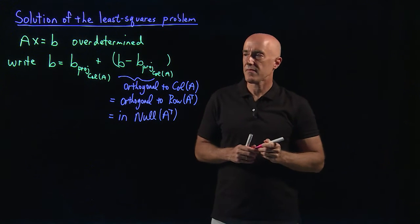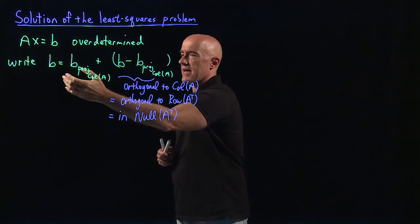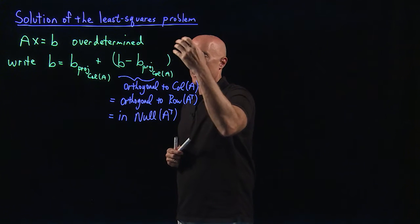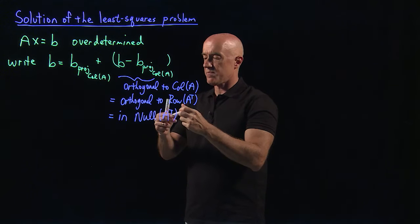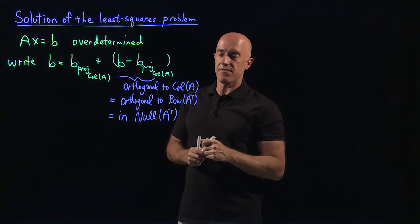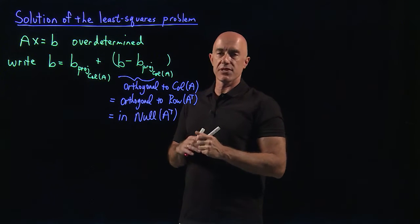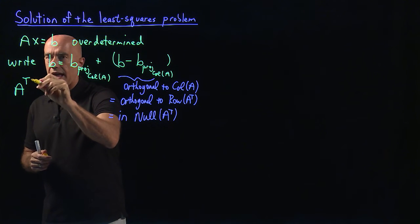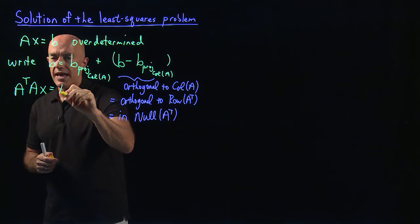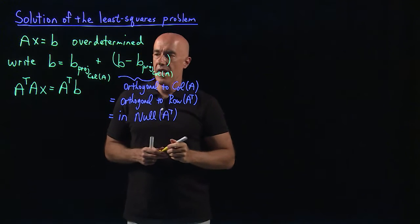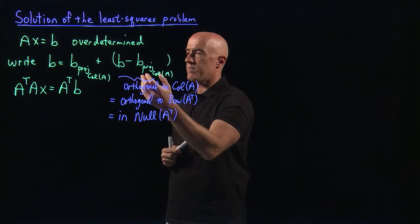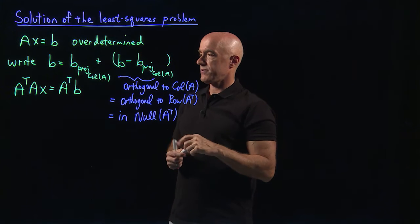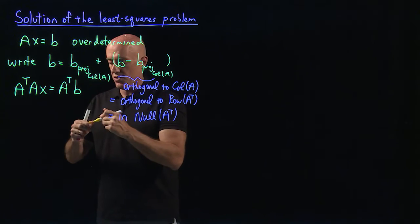So we write b as the sum of a vector projected onto the column space of A, plus a vector which is in the null space of A transpose. To get rid of the vector in the null space of A transpose, we multiply both sides of the equation by A transpose on the left. We get A transpose A times x equals A transpose times b. This system of equations is called the normal equations.